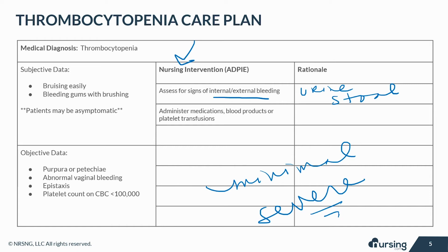Treatment is going to depend on the cause of the thrombocytopenia. Immunosuppressants may be given if the underlying cause is autoimmune. Androgens may be given to males only because of the possibility of unwanted hair growth that would occur in females. And vinca alkaloids may also be given if other measures have failed.